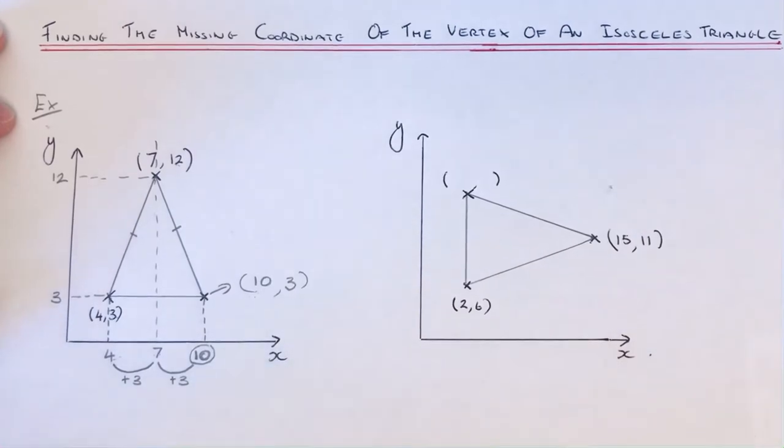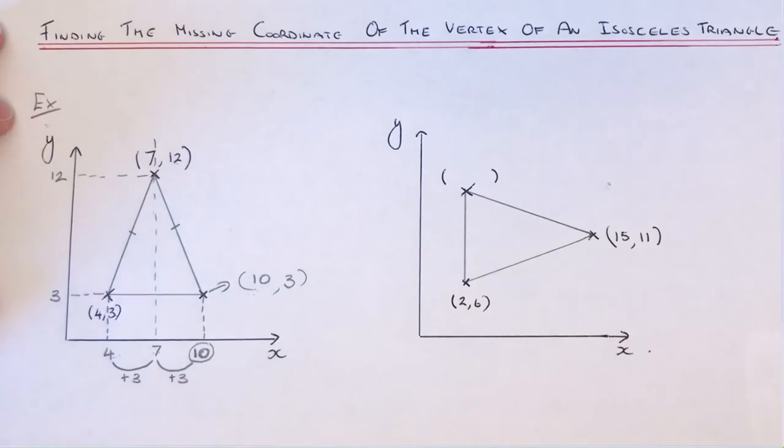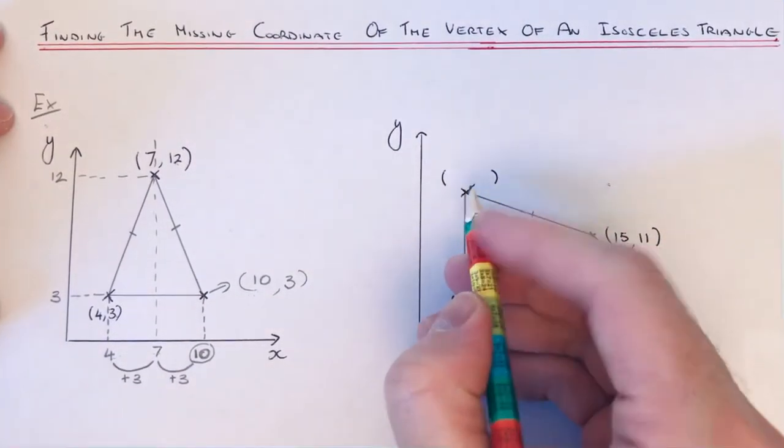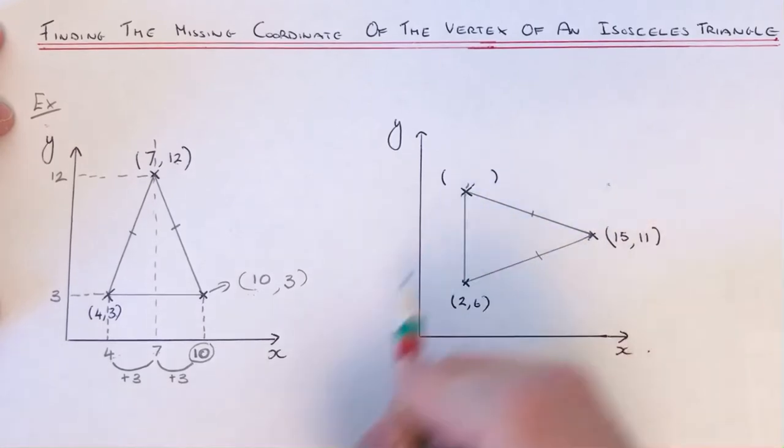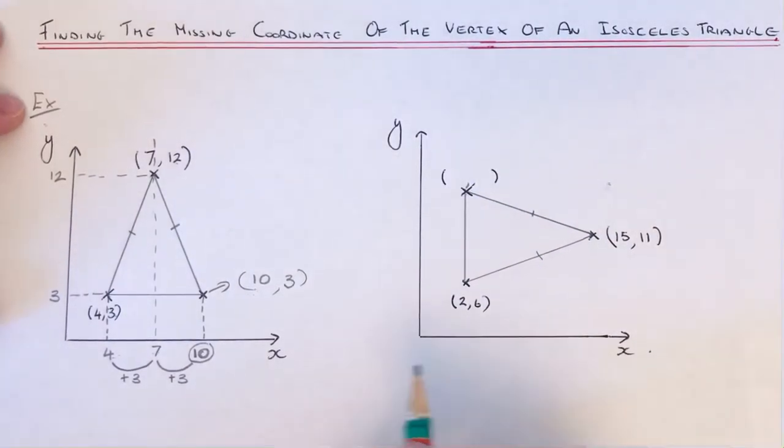Let's have a look at the second example. Again, we've got another isosceles triangle and we need to work out the coordinate of the top vertex. Again, we use the coordinates we have to mark the numbers on the x and y-axis.